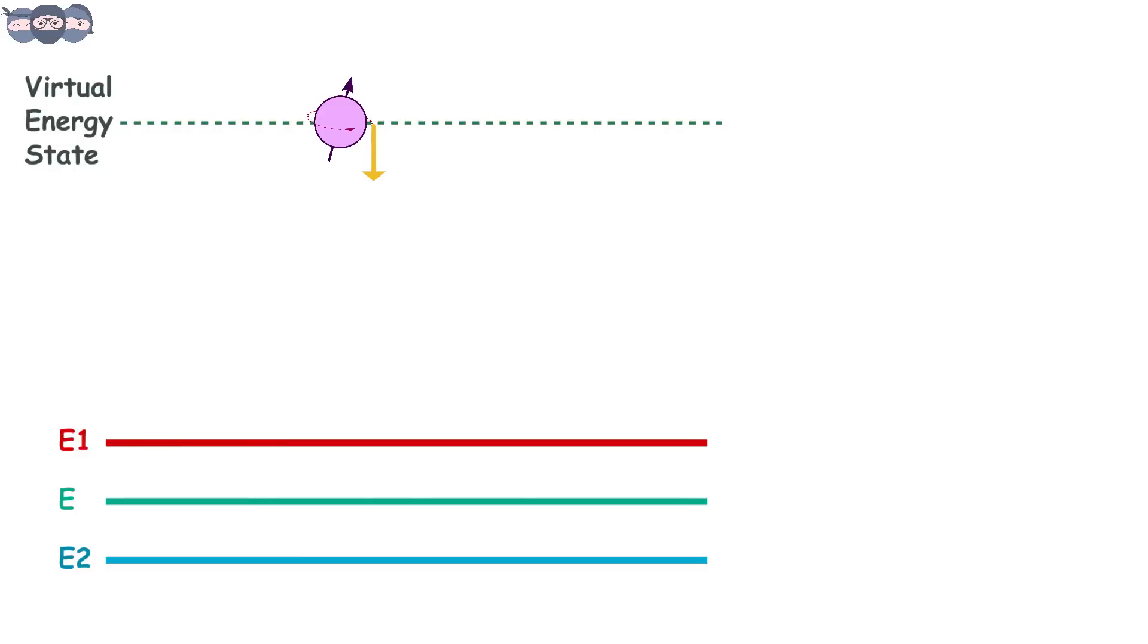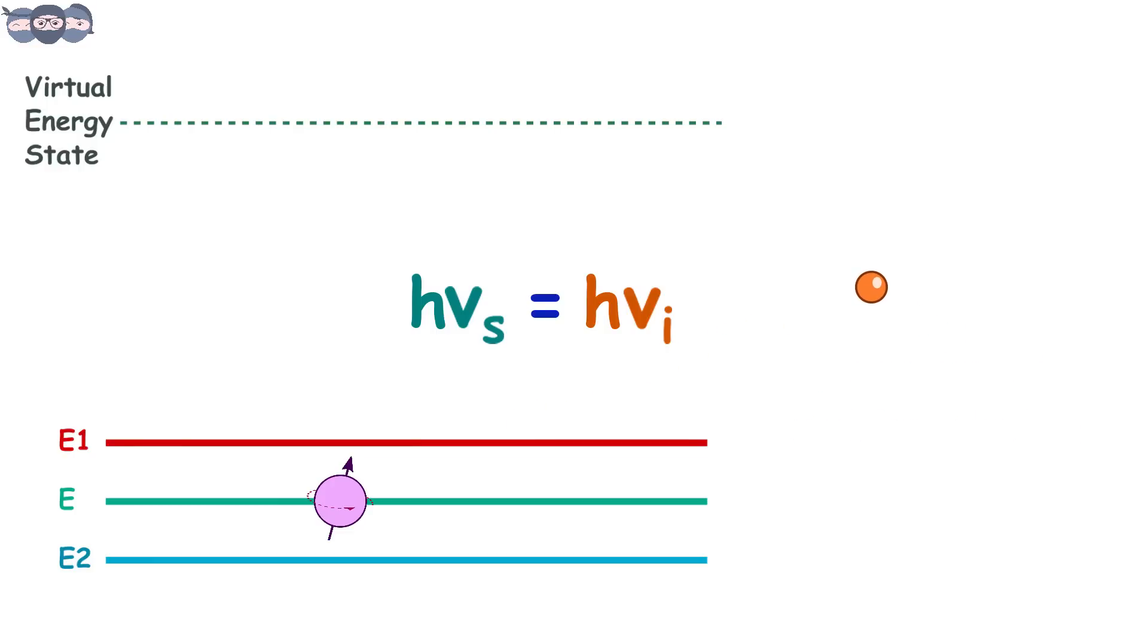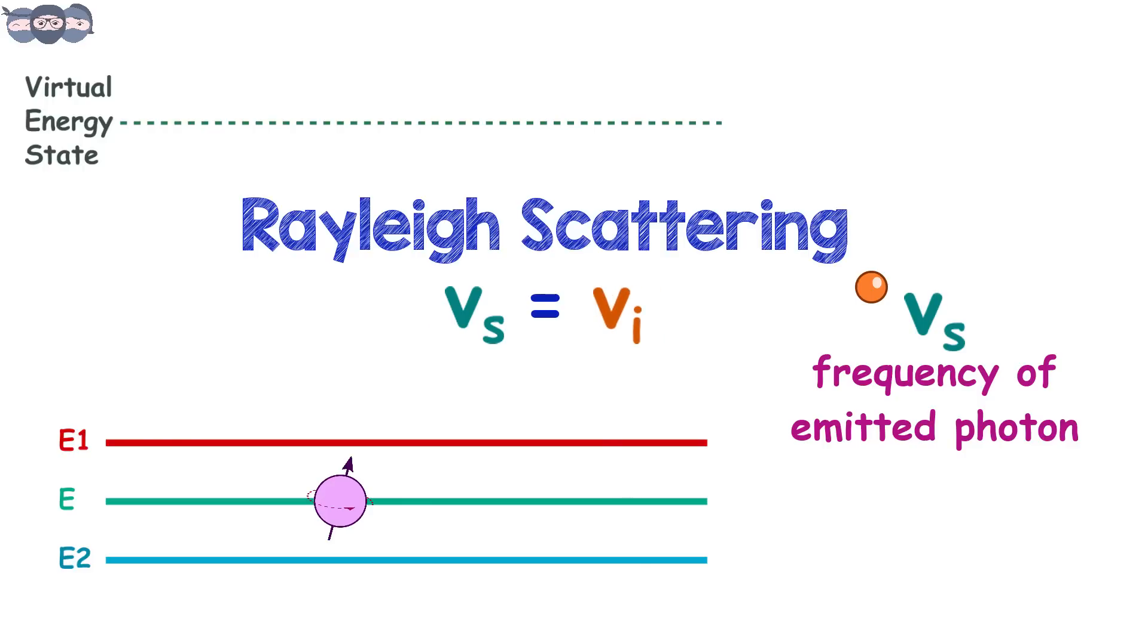The electron then falls back to an energy level by losing energy. If the energy lost equals the energy of incident photon, the electron falls back to its initial level and in this process emits another photon. Since the energy lost is equivalent to the energy of incident photon, the released photon has same frequency as the incident photon. As the frequency is same, Rayleigh scattering occurs.